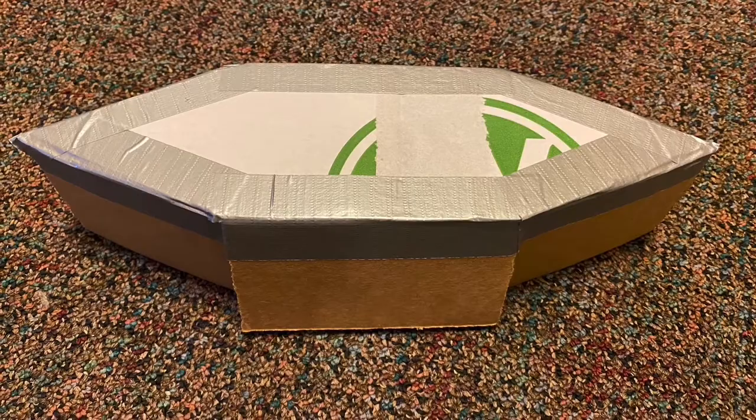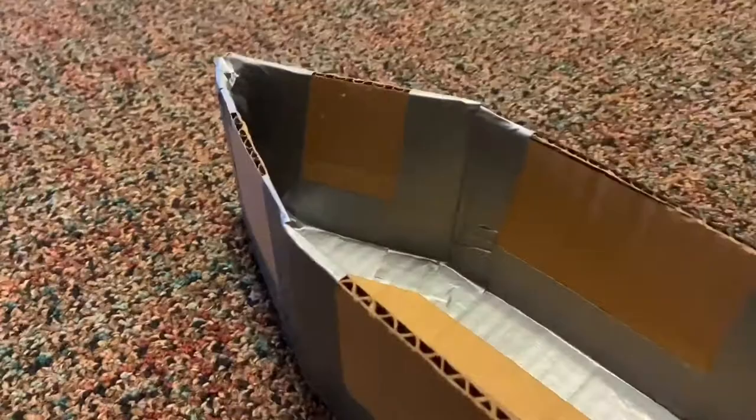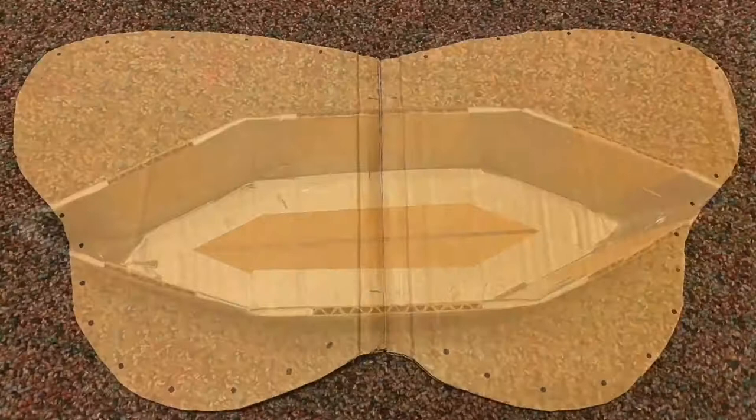Duct tape can only be used to connect joints and seams and it cannot be used to wrap around the entire boat as per regatta rules.